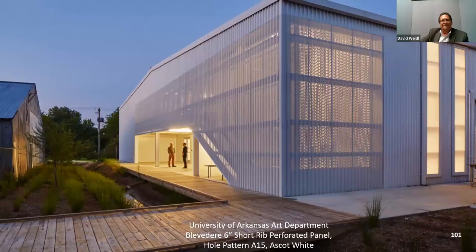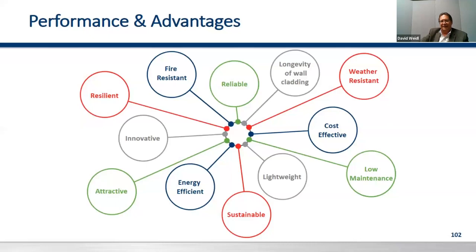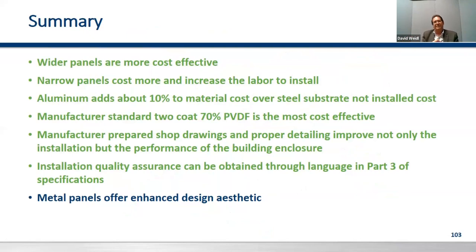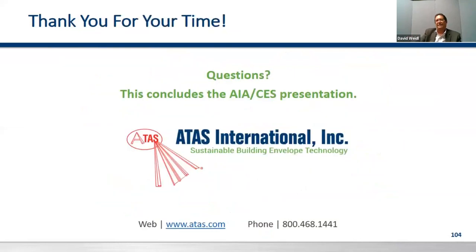To summarize: wider panels are cost effective; aluminum adds about 10% to material cost; specify two coats of 70% PVDF. Pay attention to your specs — we can help you with the verbiage for quality control, and it can give you the design result you're looking for. Thank you.